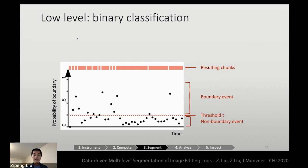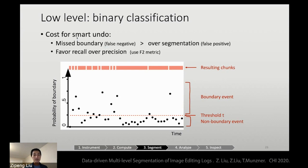When trying to decide where this threshold should be, we consider the cost for smart undo, which is our targeting task. We think that the cost for missed boundaries is larger than the cost for over-segmentation. So think about if you have over-segmentation, the user will need to issue multiple smart undoes to reach their desired point. But if you have a missed boundary, it's harder for the user to go back inside a chunk to find the exact point they wanted. So that means we're favoring recall over precision, and we've used the F2 metric to find a sweet spot for the threshold.